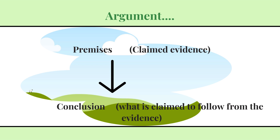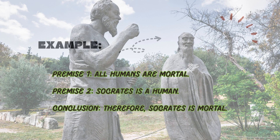Now let's see an example. Premise one: all humans are mortal. Premise two: Socrates is a human. On the basis of these two premises we get the conclusion — therefore, Socrates is mortal. So 'therefore Socrates is mortal' is the conclusion, and it follows from premises one and two.